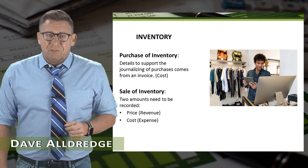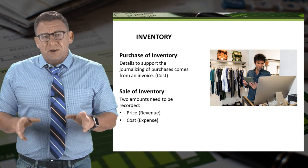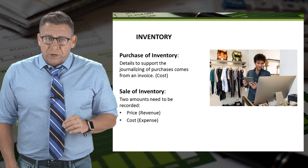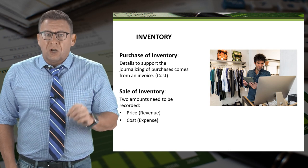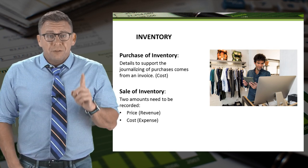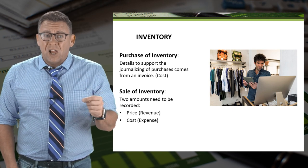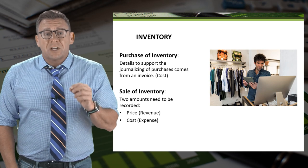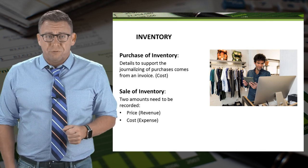Merchandising companies buy and sell inventory. When accounting for inventory, the first thing you must keep straight is there are two dollar amounts we need to track. The first one is price — this is how much a company is going to sell the inventory for. The second one is cost — this is how much the company bought the inventory for.